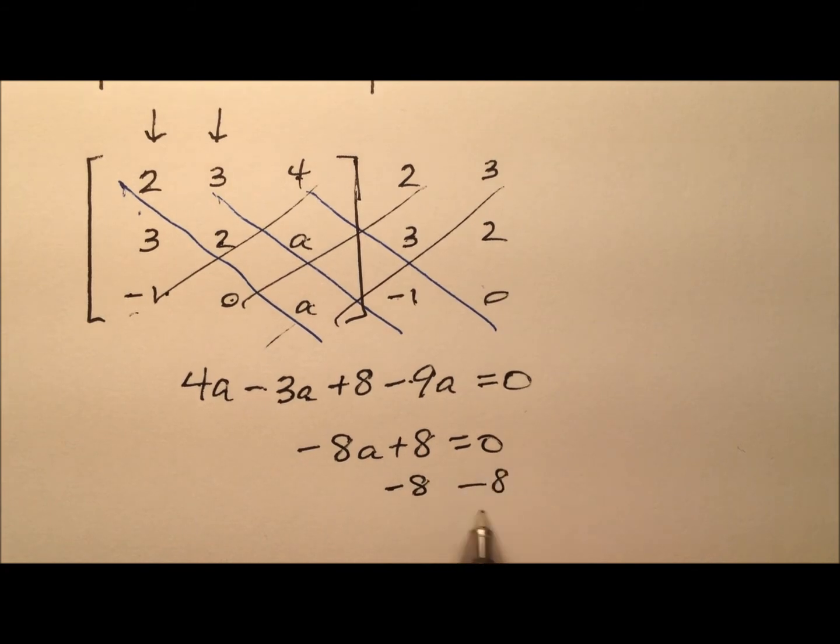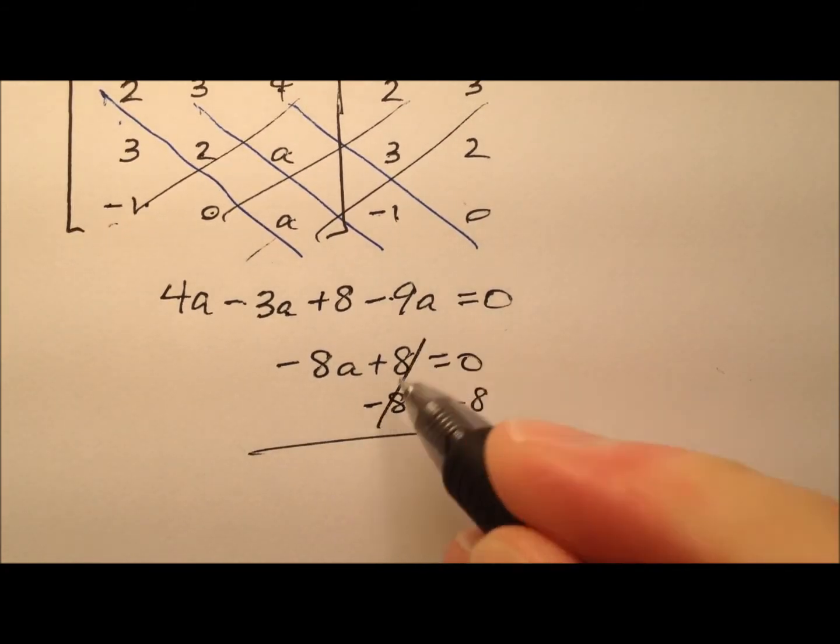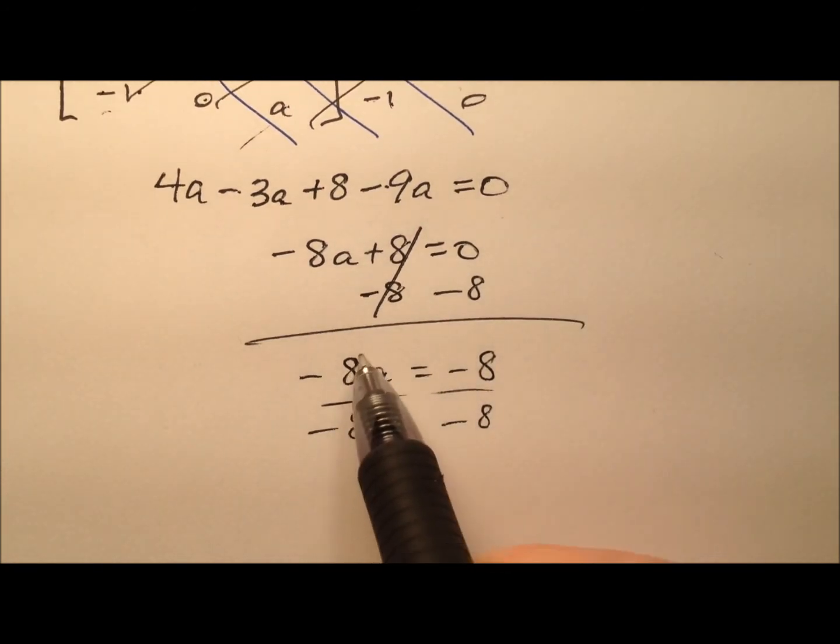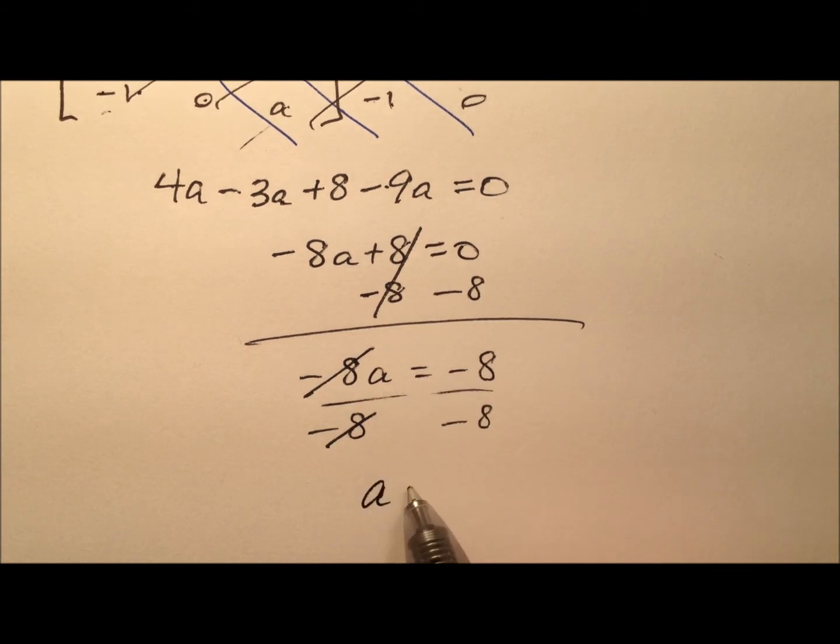Let's subtract 8 from both sides of this equation. We see that negative 8A equals negative 8, and a quick division tells us that the value of A is 1.